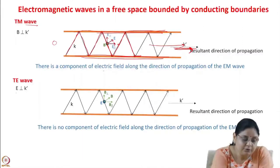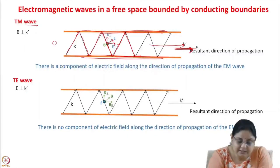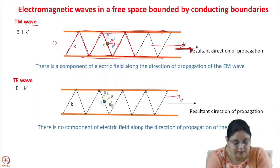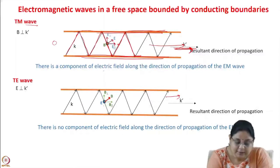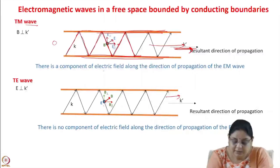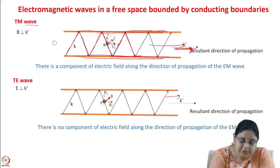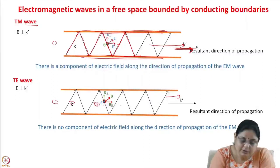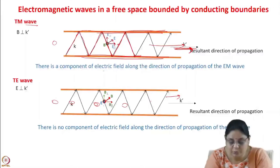We can also have the TE (transverse electric) wave, where E is perpendicular to k′. Here the wave travels by multiple reflections inside the medium bounded by conducting boundaries. The electric field is perpendicular to the direction of propagation — coming out of the screen. The magnetic field can be resolved into components B∥ and B⊥, giving a component of magnetic field along the direction of propagation, but this does not help with acceleration. The electric field is still perpendicular to the direction of propagation, so a charged particle beam will always see an electric field perpendicular to its velocity and we cannot use this for acceleration.